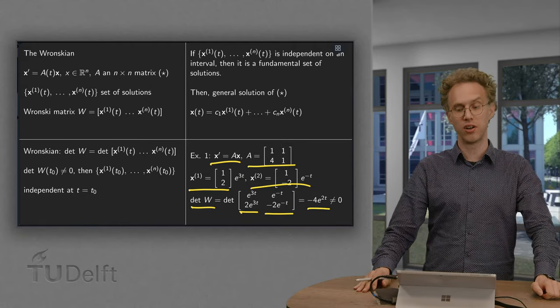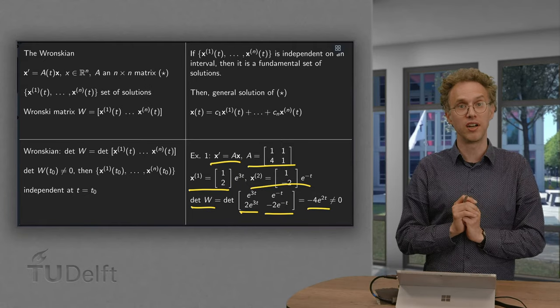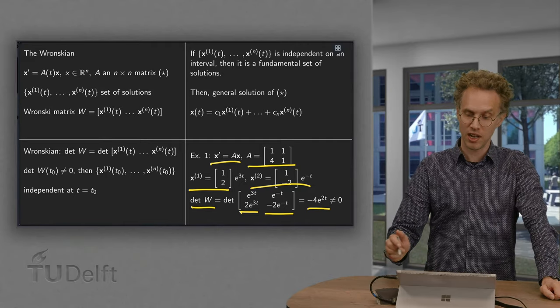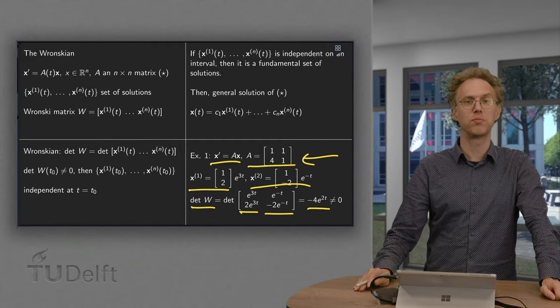This is not equal to zero, which means that our solutions are independent, which means that c_1 x^(1) plus c_2 x^(2) is the general solution of this problem over here.